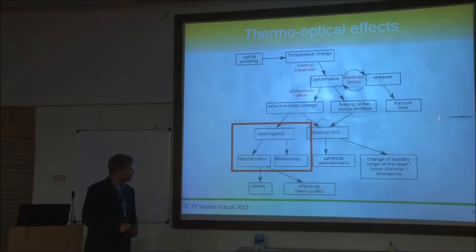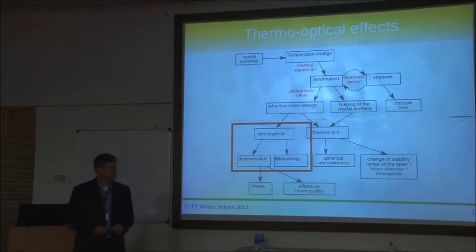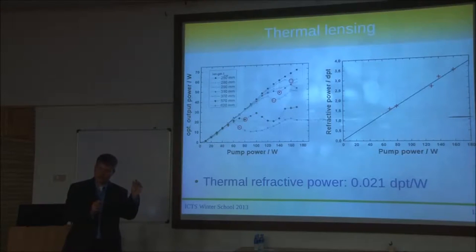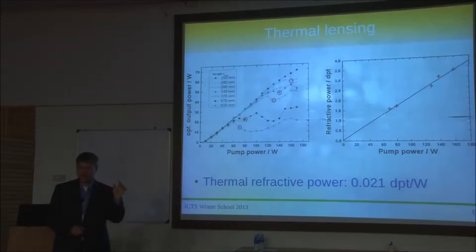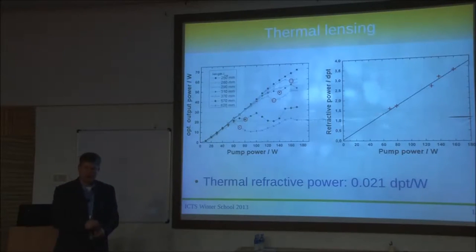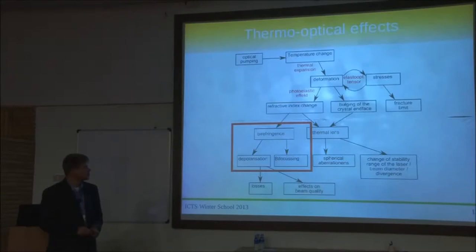The easiest way to measure the thermal lens is to just crank up the pump power, look at how the output power behaves, and take that as a rough number — it's not very accurate anyway. The second stability range specifically interests the fundamental mode. Higher order modes are also stable but they are kind of shifted. At really high pump powers with this configuration the laser is always unstable because the lowest mode that can oscillate is so huge that it doesn't even fit into the gain medium.